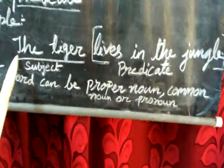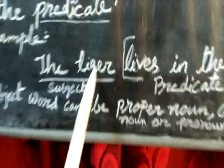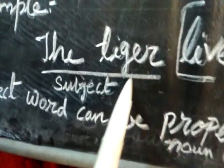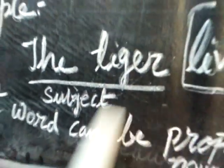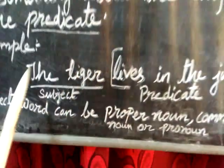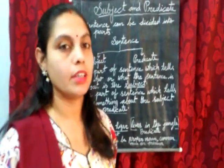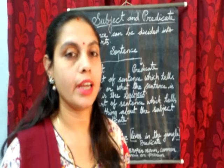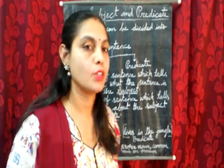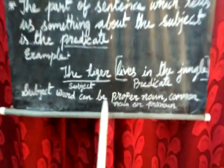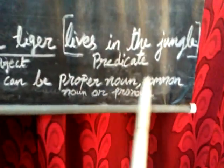The subject can also be a common noun. Like in the example 'the tiger' — tiger is a common noun because no particular name is written. It can also be a pronoun. For example: 'He is a good boy.' Here, 'he' is a pronoun and it is the subject. So remember, the subject word can be a proper noun, common noun, or pronoun.